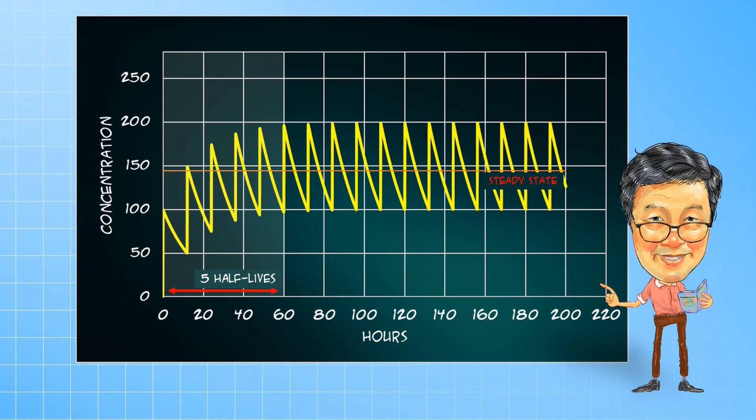Note, however, that for this drug that has a half-life of 12 hours, being dosed at 12-hourly dose intervals, the fluctuations between maximum and minimum is about 2-fold. Similarly, the concentrations at steady-state compared to the first dose is also about 2-fold. This is accumulation. We will look at these effects again in a later video, so just keep this in mind for the time being.